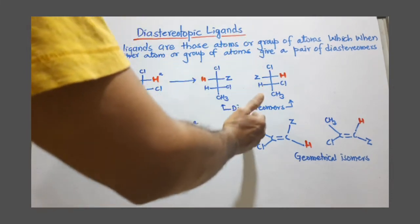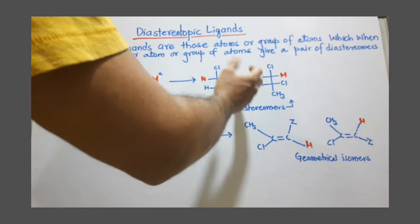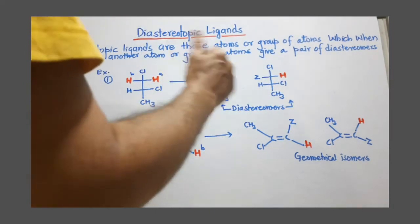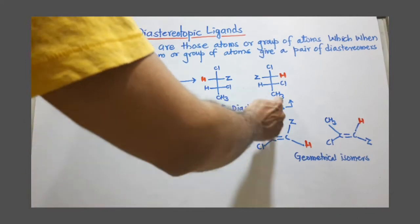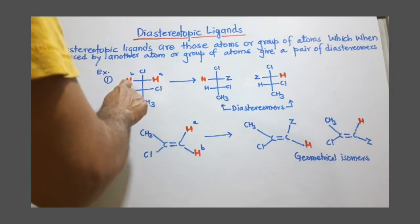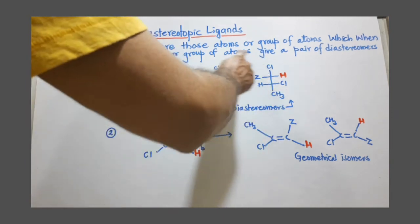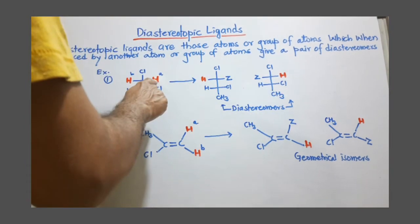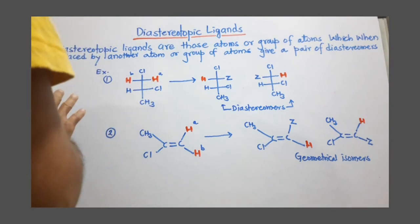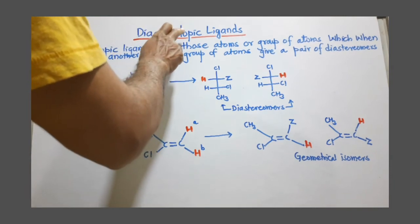Looking at the structures of these two molecules, they are not mirror images of each other. They are stereoisomers but not mirror images, so they are called diastereomers. By replacing these two protons one by one and obtaining diastereomers, these protons are stereochemically non-equivalent and are diastereotopic ligands.